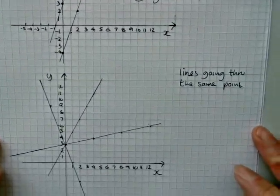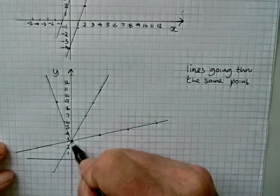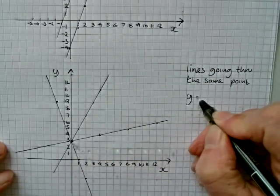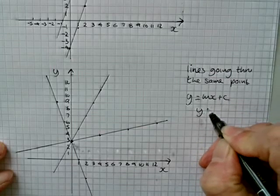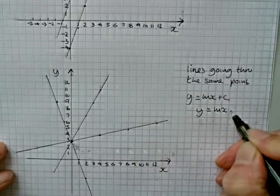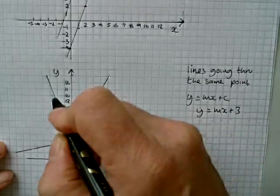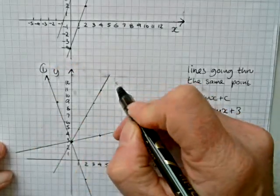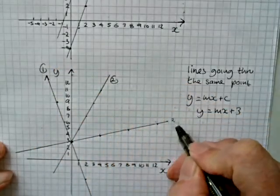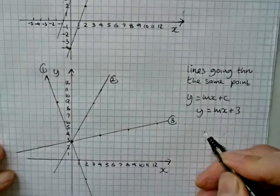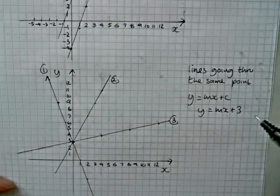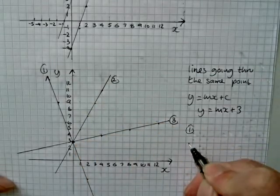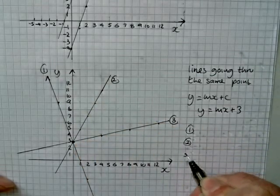Now we're going to look at lines that are going through the same point, and the value of c is the same. So in this particular case, all of them will be in the form y equals mx plus 3. What is different about them is the gradient. So we'll start with line one, and do two, and we'll do three.